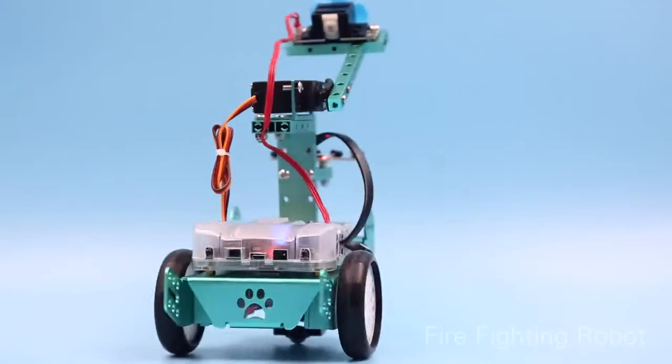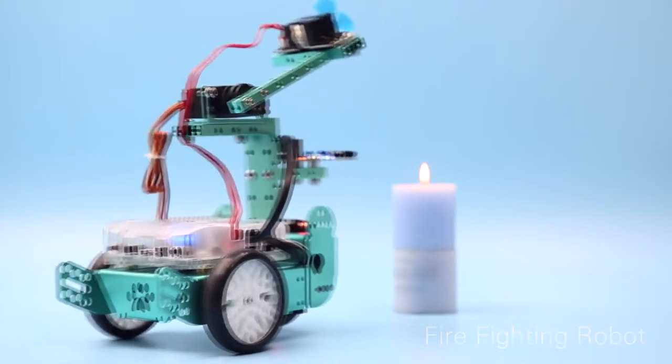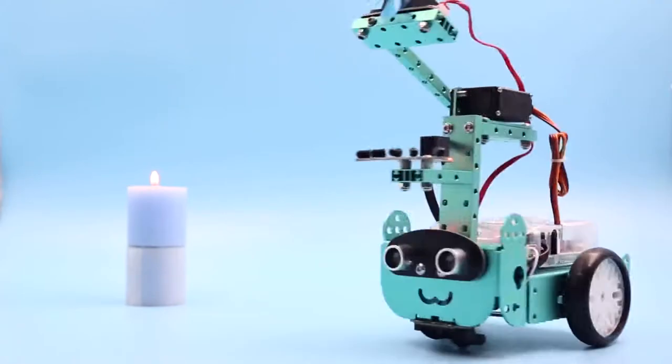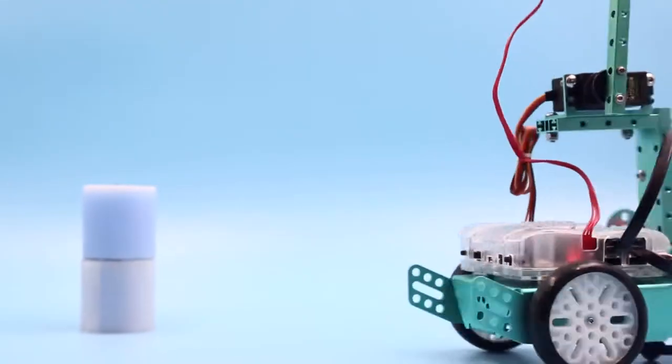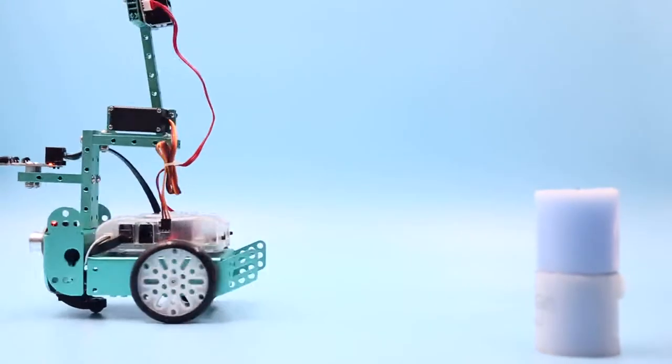The flame sensor of the firefighting robot can automatically detect the position of the ignition point. When the flame is detected, the fire extinguishing program is opened, and the fire is blown out by using the steering gear and the 130-motor module.